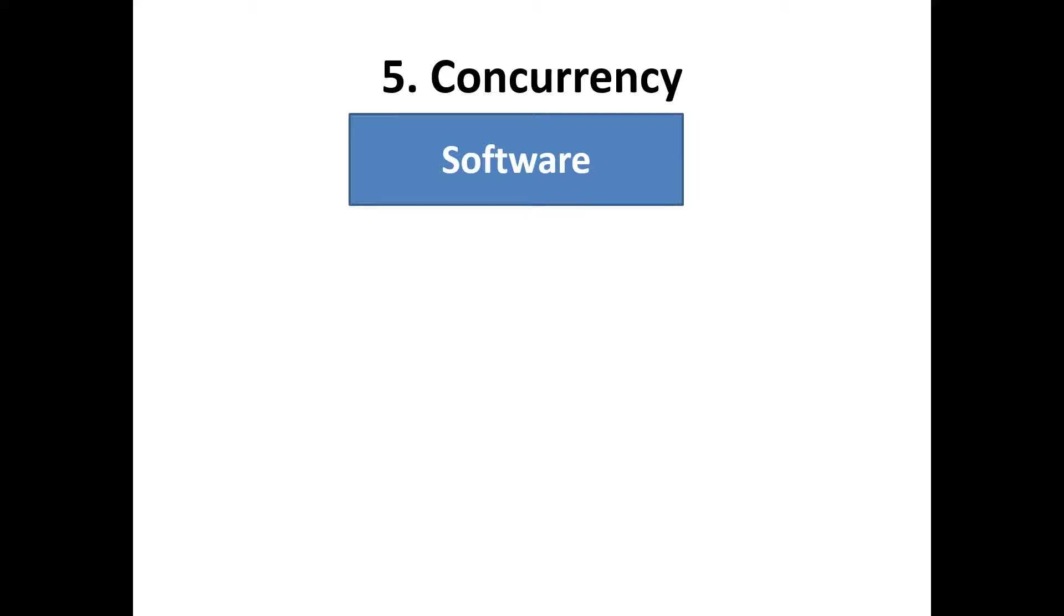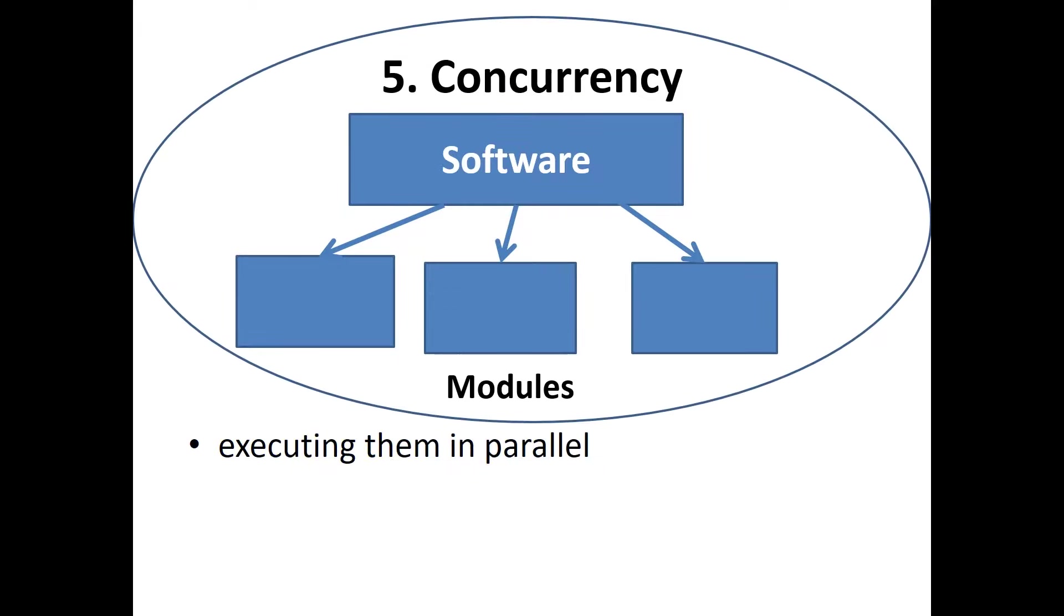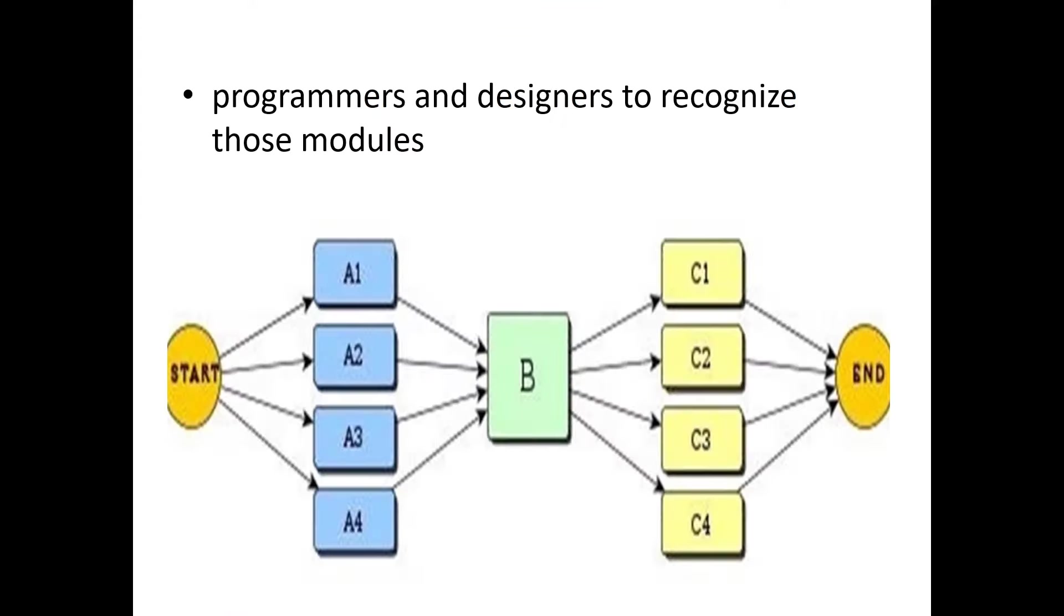In the software design concurrency is implemented by splitting the software into multiple independent units of execution like modules and executing them in parallel. In other words, concurrency provides capability to the software to execute more than one part of code in parallel to the other. It is necessary for programmers and designers to recognize these modules which can be made through parallel execution.